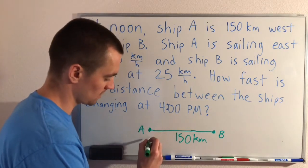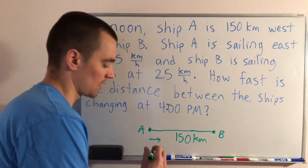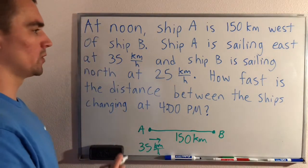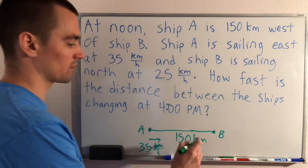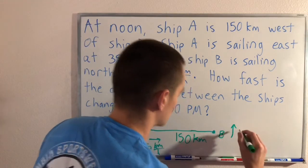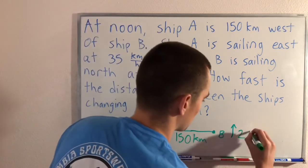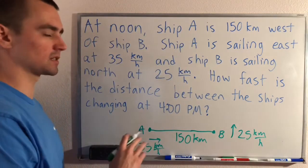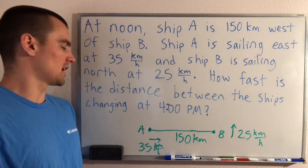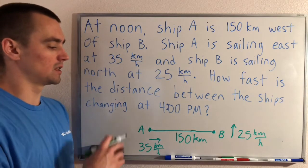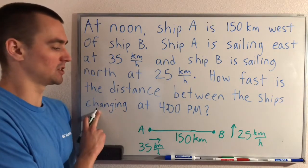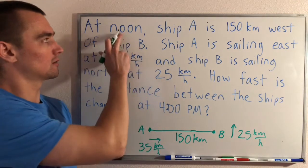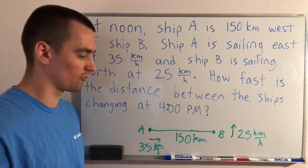Ship A is sailing east at 35 kilometers per hour, so it's moving in that direction. And ship B is sailing north at a rate of 25 kilometers per hour. The question asks us to look at the distance between the ships and how fast that rate is changing at four o'clock PM, which is four hours after noon.